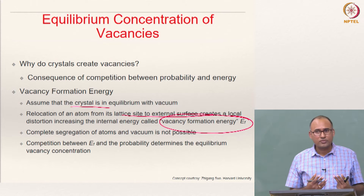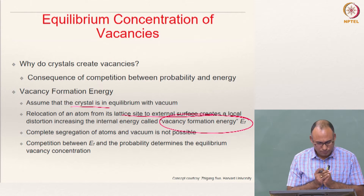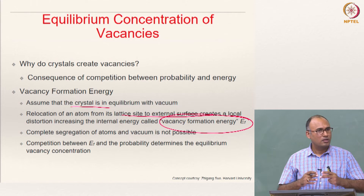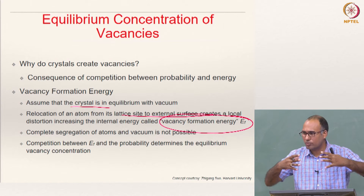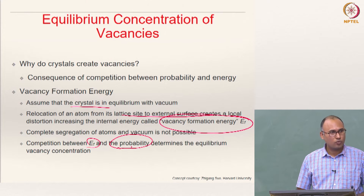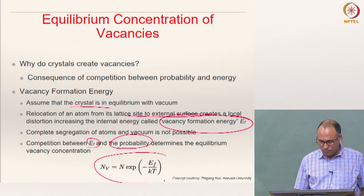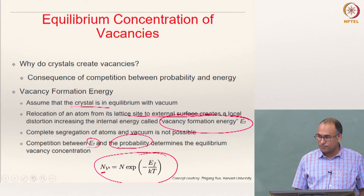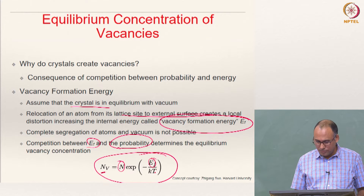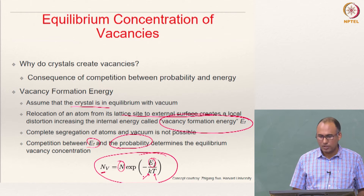The energy associated with moving an atom from its crystalline site to the surface is called vacancy formation energy. This is a property of the material — every material has a vacancy formation energy because it depends on the bond strength. Complete segregation of atoms and vacuum is not possible, so the competition between vacancy formation energy and probability determines the equilibrium vacancy concentration. The expression is: Nv = N · exp(−Ef / KT), where Nv is number of vacancies, N is number of lattice sites, Ef is vacancy formation energy, T is absolute temperature, and K is Boltzmann's constant.